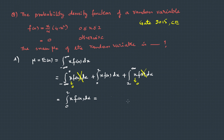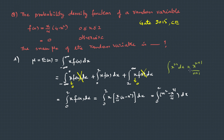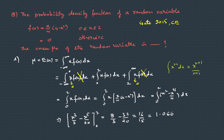So this can be written as the integral from 0 to 2 of x·f(x) dx. Substituting the function, and expanding, this becomes the integral of (x² − x⁴/4) dx. Applying the integration formula — integral of xⁿ dx = xⁿ⁺¹/(n+1) — this becomes [x³/3 − x⁵/20] from 0 to 2. Substituting the limits, we get the answer 16/15, which is 1.066.